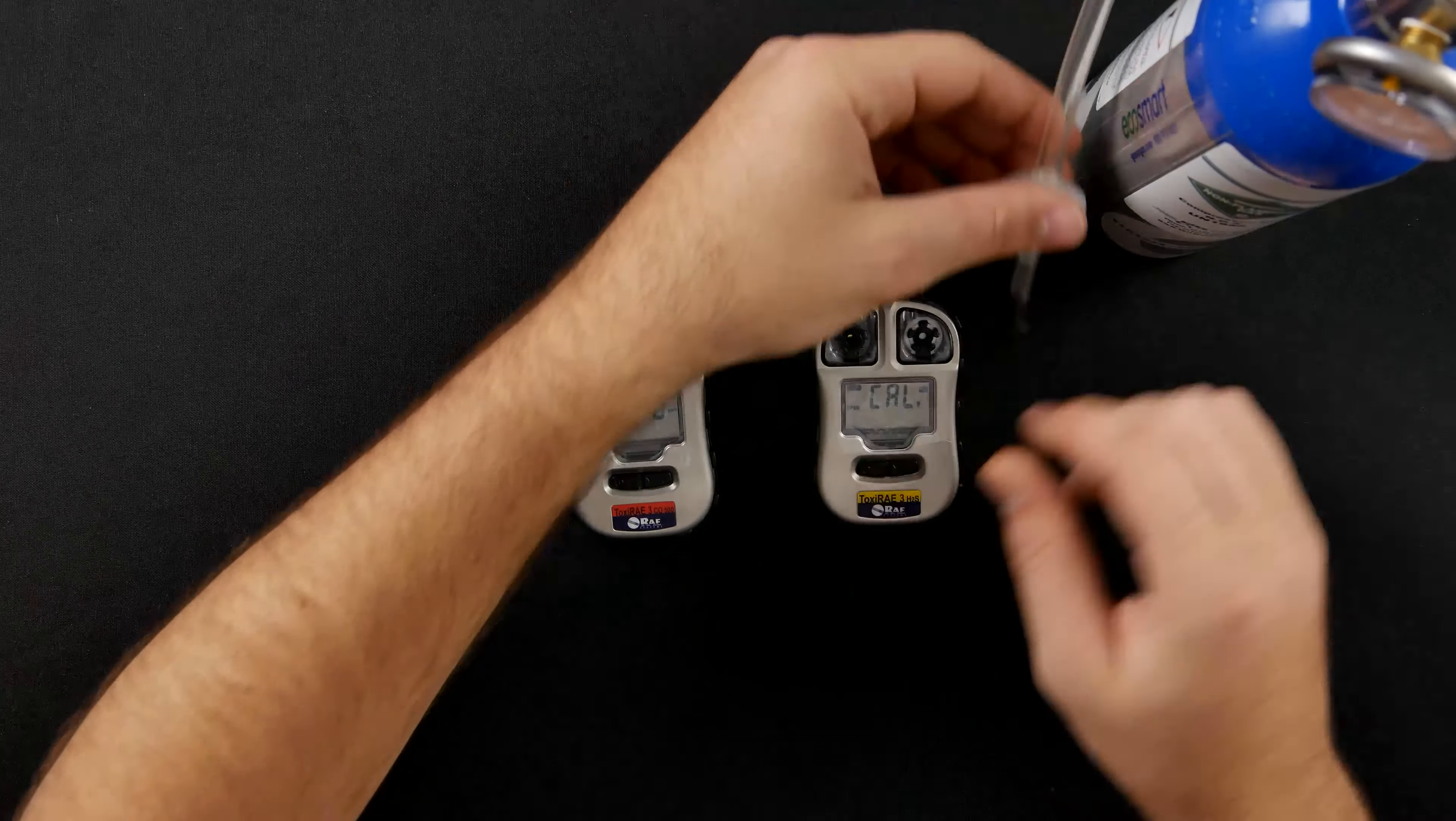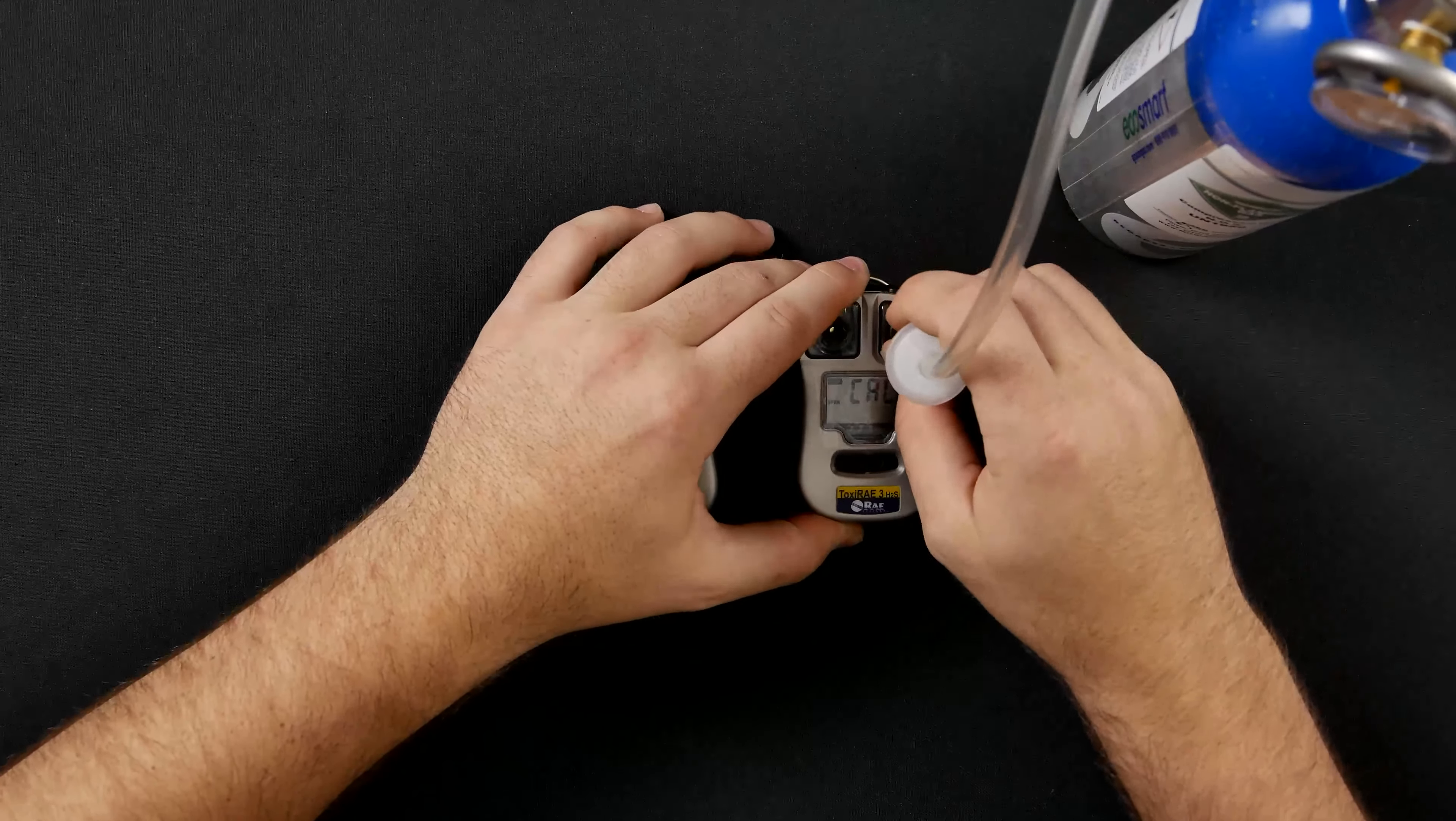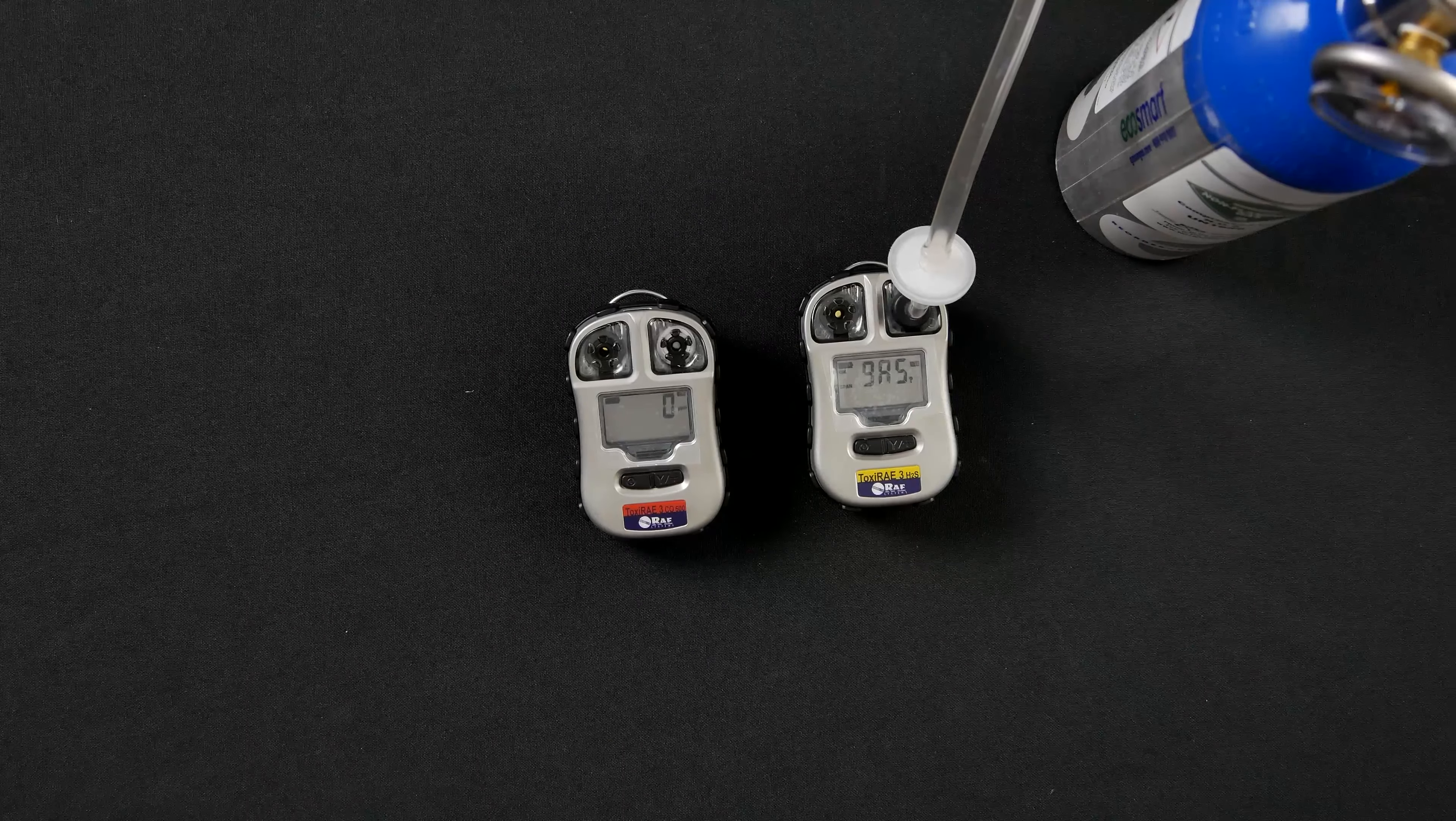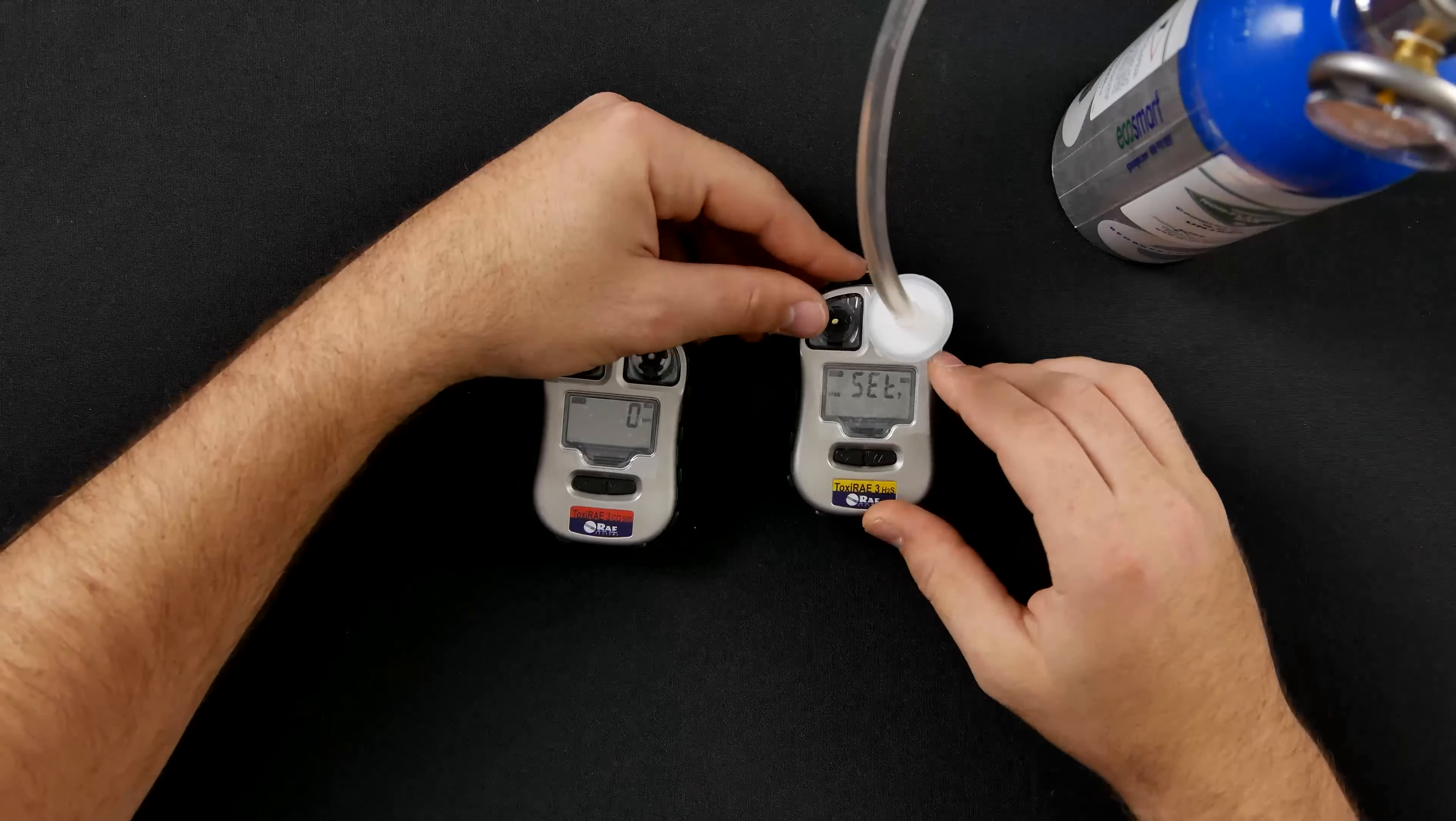This span calibration, you will connect the adapter to the sensor cover. Turn on the gas and select yes to start the countdown. At the end of the calibration, turn off the gas and disconnect the adapter.